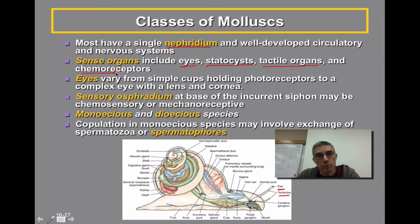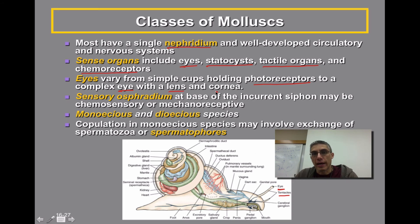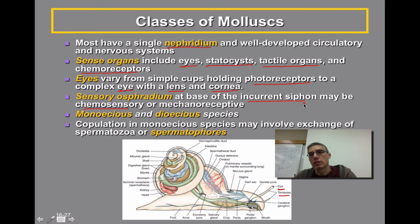They can have various chemoreceptors, especially the aquatic ones. The eyes can vary from a simple cup that holds a photoreceptor — meaning they simply sense light — to a more complex eye that would actually have a lens and even a cornea, which means these animals could actually see some very simple images. The sensory osphradium is sort of like a sense of smell because it is chemosensory in nature. This is going to be at the base of the incurrent siphon for aquatic gastropods, and it could also be mechanoreceptive — possibly somewhat tactile in nature.